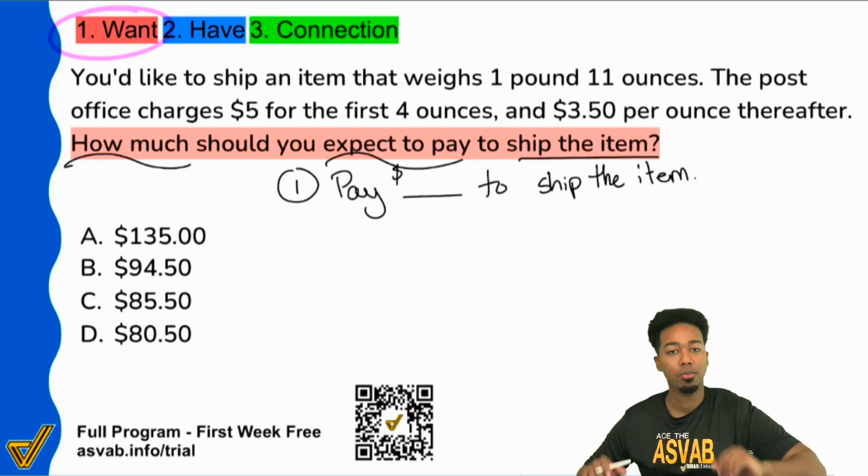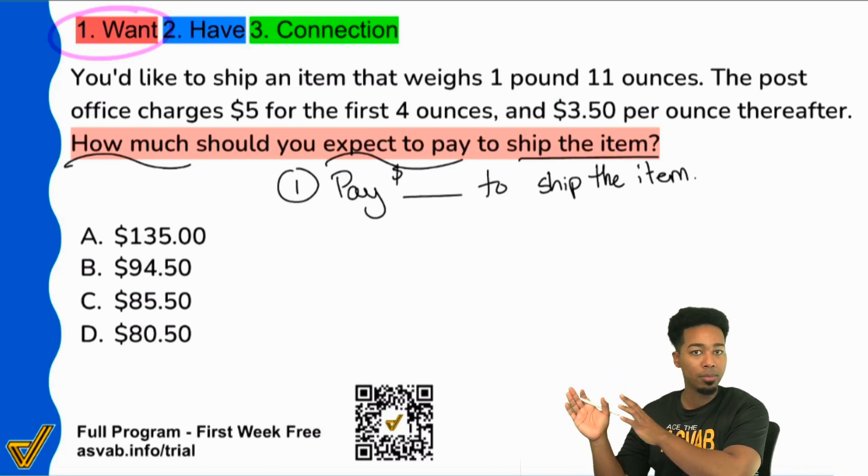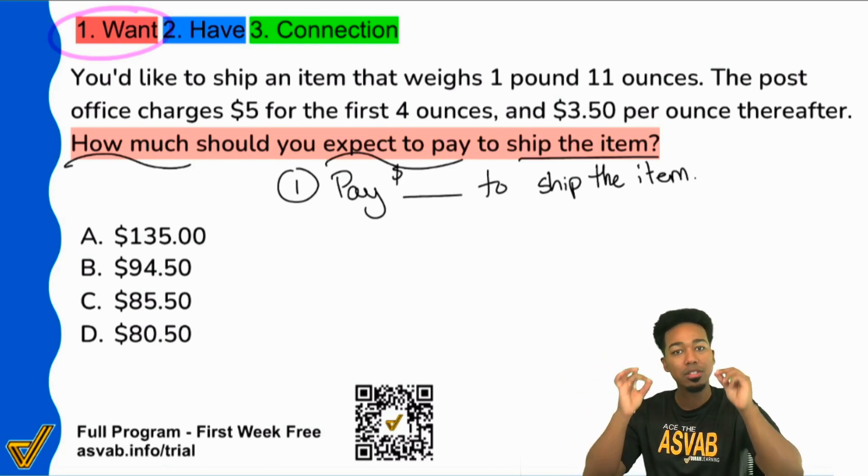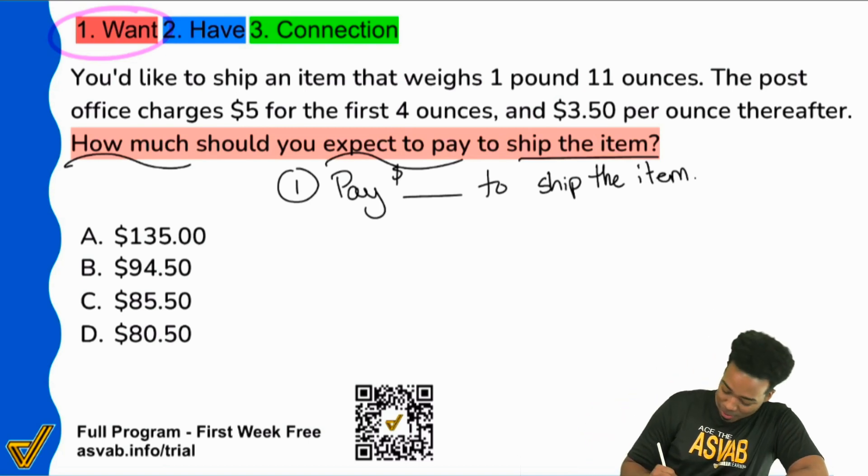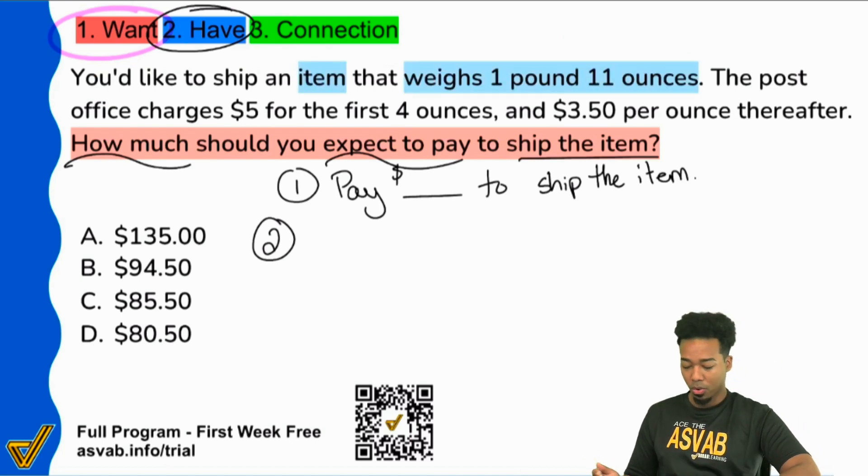Step one, boom. We know how much we're supposed to be expecting to pay. Next up, let's read the information and see how anything that we're told in this problem can help me get to how much I'm paying. That's all I care about. Number two, what do we have? Let's go through the information and highlight the information we have. You'd like to ship an item that weighs this much right here. The item weighs one pound, 11 ounces.